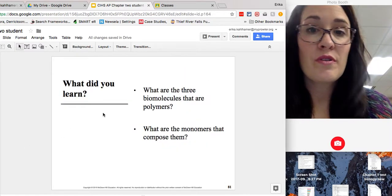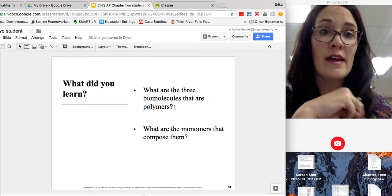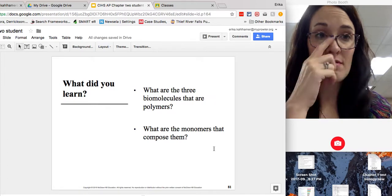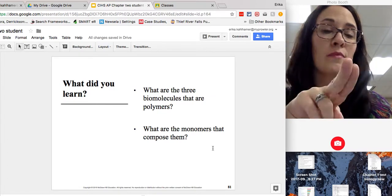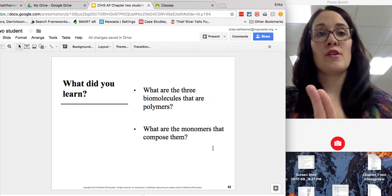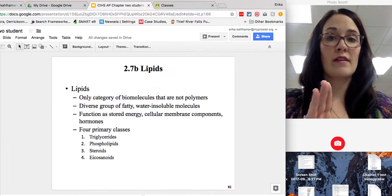So what are the three biomolecules that are polymers? Carbohydrates, proteins, and nucleic acids. What monomers compose them? Nucleic acids, you have to use nucleotides. Proteins, you need to use amino acids, and carbohydrates, you need to use simple sugars called monosaccharides.